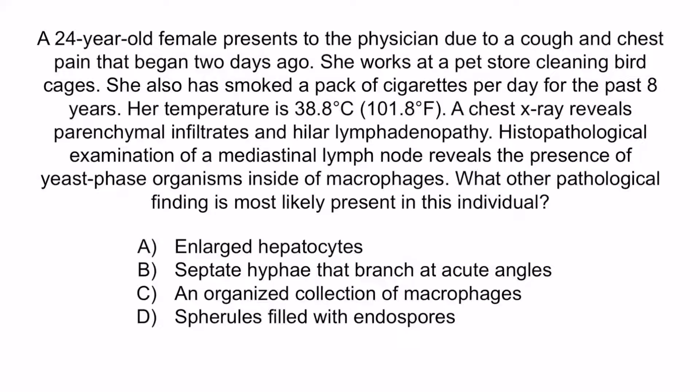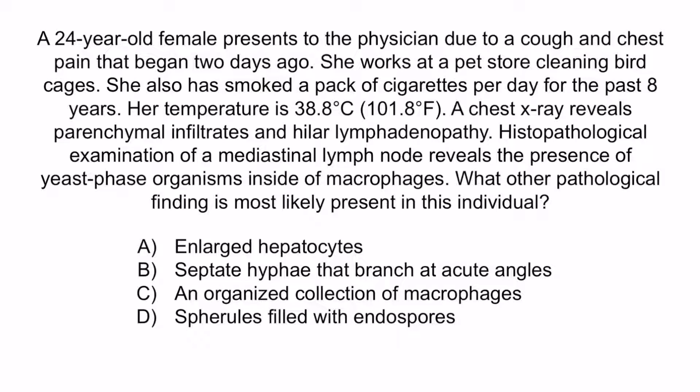Now that we've covered the image, let's review with a question. A 24-year-old female presents to the physician due to a cough and chest pain that began two days ago. She works at a pet store cleaning bird cages. She has also smoked a pack of cigarettes per day for the past eight years. Her temperature is 38.8°C (101.8°F). A chest x-ray reveals parenchymal infiltrates and hilar lymphadenopathy. Histopathological examination of a mediastinal lymph node reveals yeast phase organisms inside macrophages. What other pathological finding is most likely present? A: enlarged hepatocytes. B: septate hyphae that branch at acute angles. C: an organized collection of macrophages. D: spherules filled with endospores.